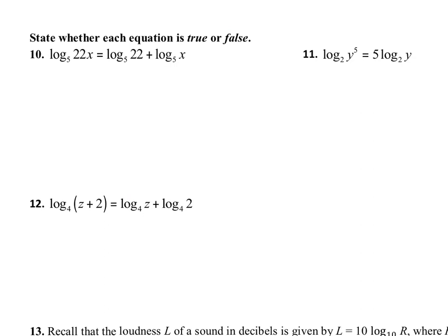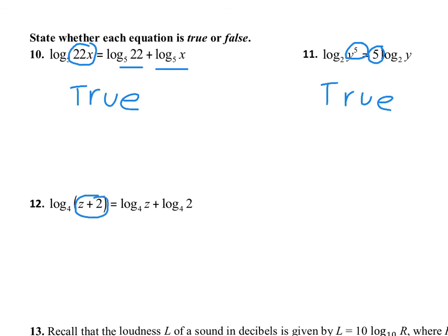On the back we're checking if these equations are the correct application of the properties. For number 10, the argument has a product and they broke it up using addition — that's true. For number 11, there's a power in the argument and they moved the exponent to the front — that's a correct application of the power rule. Over here we have addition in the argument, and you are not allowed to break up addition in the argument — so that one is false. This would have been correct if we had 2z in parentheses as a product.